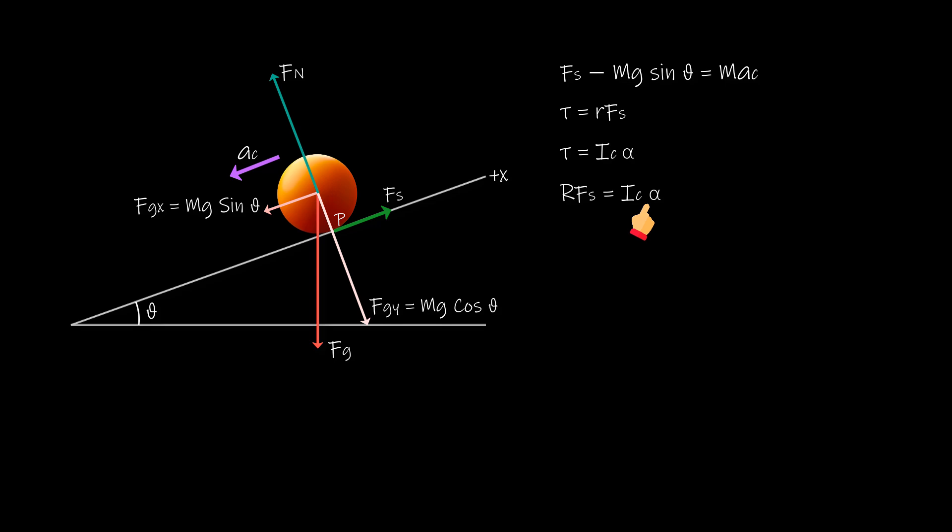We have a total of three unknowns now and two equations, but we realize that since the body is rolling smoothly we can write A center of mass equals R alpha and this helps us to relate the unknowns alpha and A center of mass. This brings us down to two unknowns and two equations if we use this relationship. But one thing we must make note of is that here A center of mass is negative since it points in the negative direction of the x-axis and alpha is positive since the sphere has counter clockwise rotation. Therefore we must substitute minus A center of mass upon R for alpha.